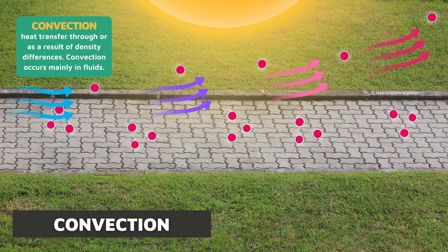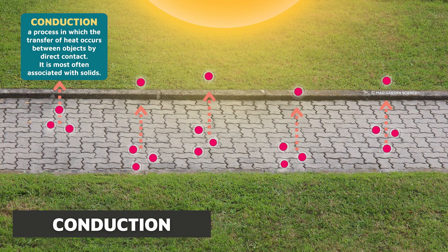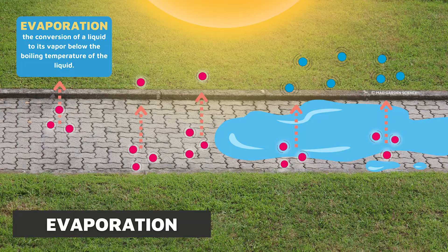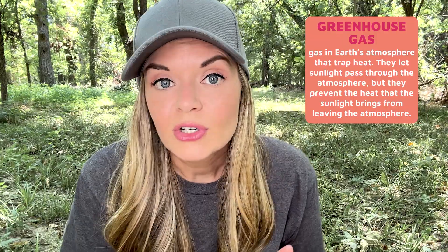Convection occurs when air warmed by the surface rises upward, moving heat away from the surface and creating air currents. Conduction transfers heat to cooler air that directly touches the hot surface. Conduction can also transfer heat to water resting on the surface, causing evaporation. Some of this heat escapes back into space, but some is absorbed by greenhouse gases. Those gases in the atmosphere then re-emit the absorbed heat. If those greenhouse gases didn't absorb and re-emit heat, Earth wouldn't be warm enough for living organisms to survive.